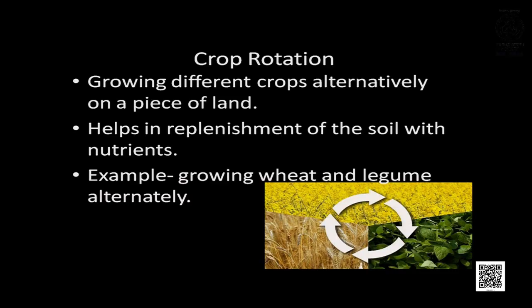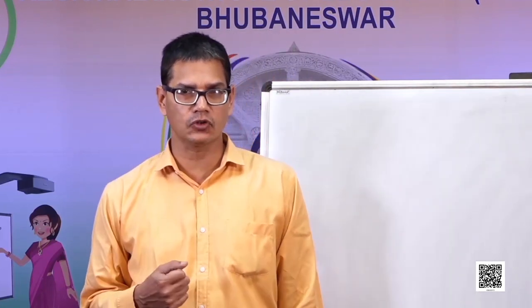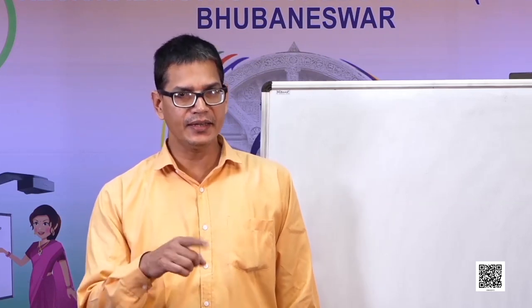Crop rotation is growing different crops alternately on a piece of land. For example, in one season wheat is grown, and in the next season soybean or gram is grown. It helps in replenishment of soil nutrients. When wheat is grown, it takes up nitrogen, leaving the soil deficient. In the next season, leguminous plants are grown, enriching the soil with nitrogen through their root nodule bacteria.